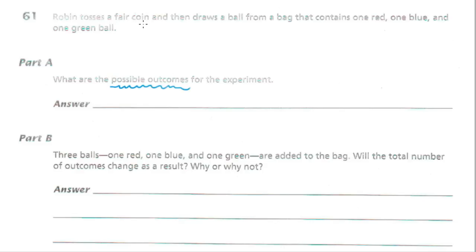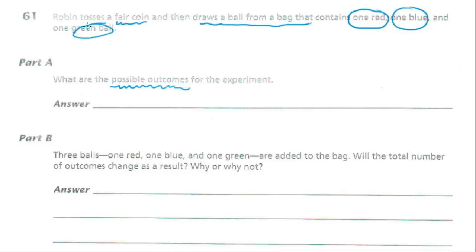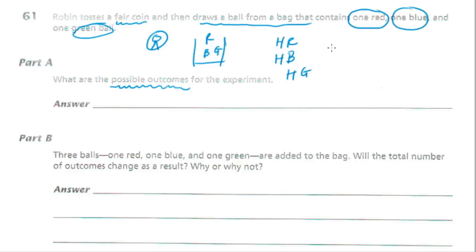We're told Robin tosses a fair coin — just a regular coin, 50-50 heads or tails — and then draws a ball from a bag containing one red, one blue, and one green. So two things are happening: the coin is being thrown, and she's picking from a bag with one red, one blue, and one green.